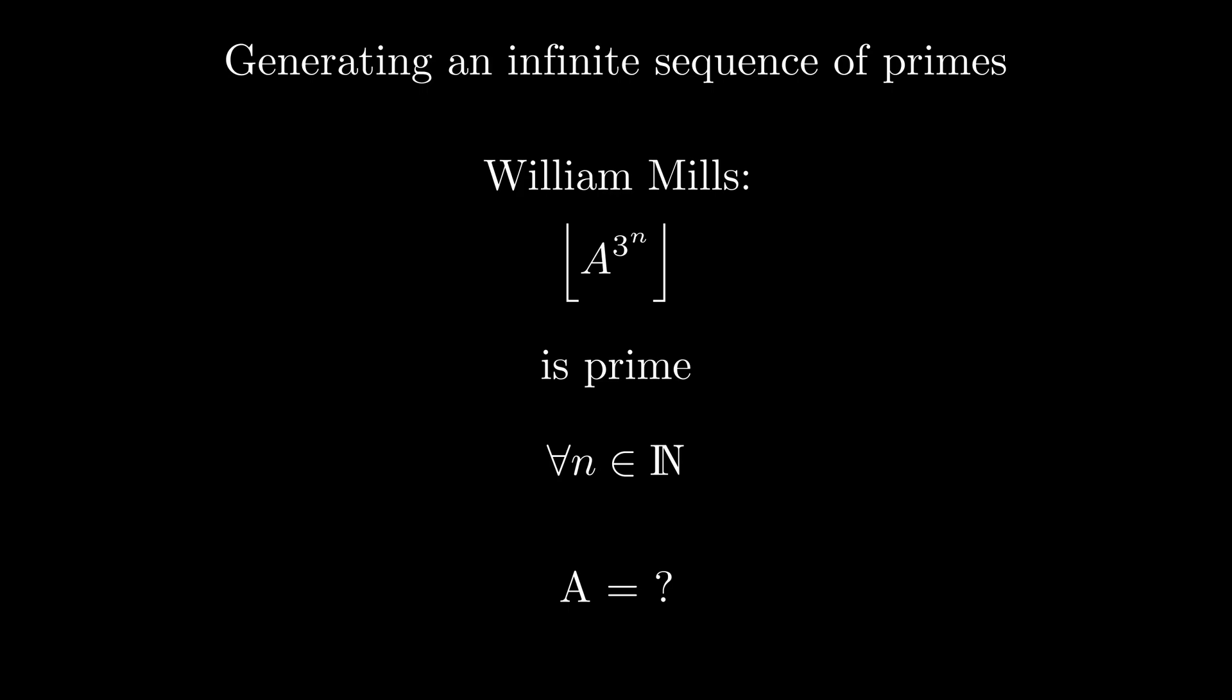Mills did not give a constructive proof, meaning that he proved the existence of such number a, but hasn't actually calculated it. We don't even know if it's rational or irrational, so finding it out is a very complex task.